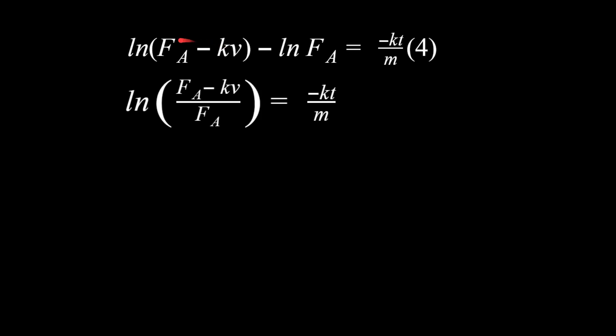Using rules for natural logs, the difference of two logs becomes the log of a quotient: ln((F_A minus kv) / F_A) equals minus kt/m — this is equation four. The goal is to isolate v. Most of the steps from here are algebra, but there is one slightly tricky step coming up.